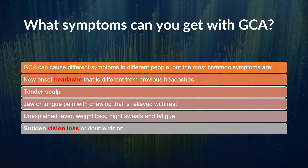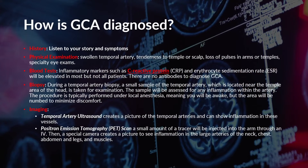You can also have symptoms that are less specific: a fever that doesn't quite fit, weight loss, night sweats, and fatigue. And as we talked about earlier, you can have sudden vision loss — often just complete loss of vision in one eye — but also double vision, because one eye isn't quite working as well as the other, so they're not lining up.